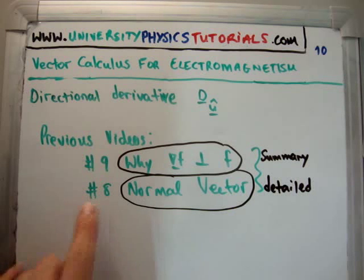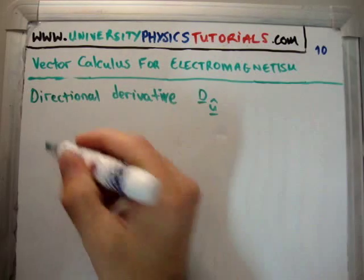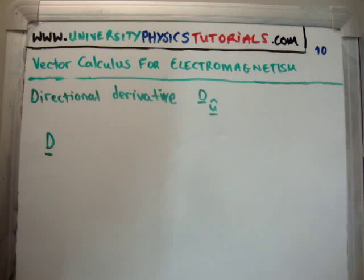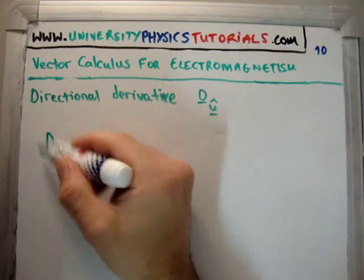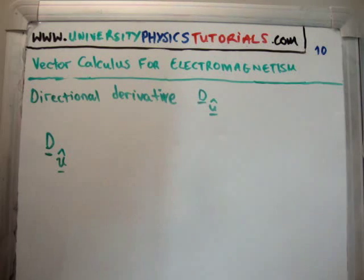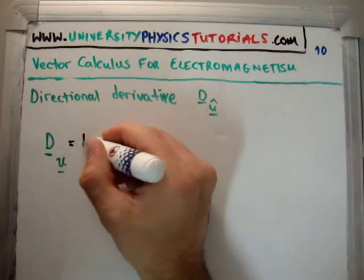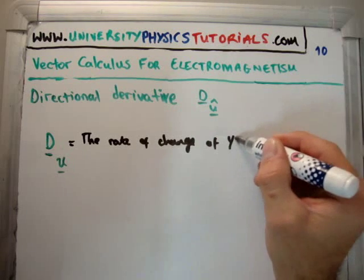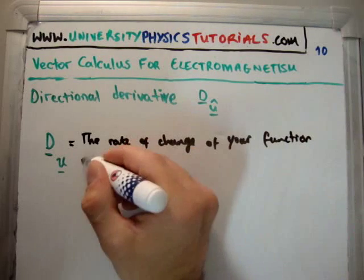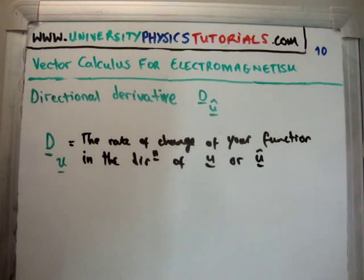I'm going to build on everything from video 8 and talk about the directional derivative. The directional derivative is notated as follows: D is our directional derivative — notice it's a vector — and we talk about it in the direction of some other vector, let's say U. This other vector could be a unit vector, in which case we give it a hat. What it means is the rate of change of your function in the direction of U, or U-hat.